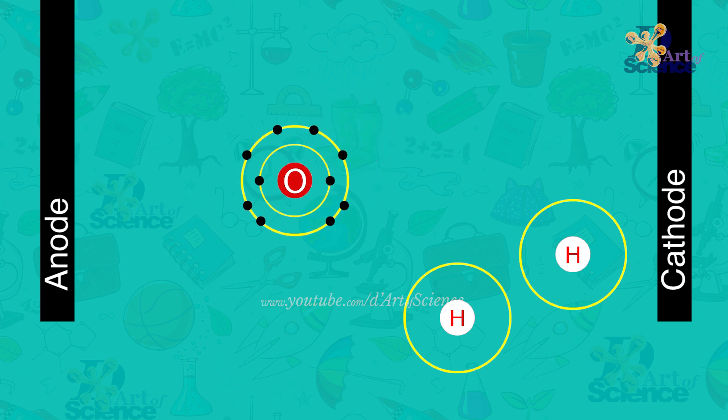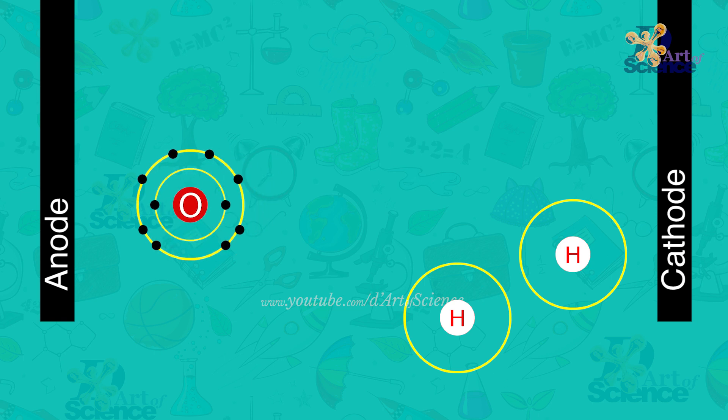Oxygen, on the other hand, undergoes a reduction reaction, where it gains electrons and acquires a negative charge, and therefore heads to the anode.